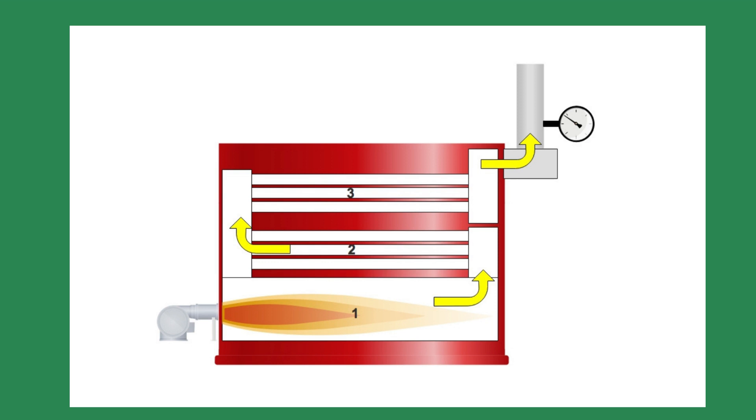Flame impingement could also cause embrittlement of the boiler metal, lowering the boiler's life. Embrittlement is the loss of ductility of the metal. It is like what happens when you keep bending a paper clip.